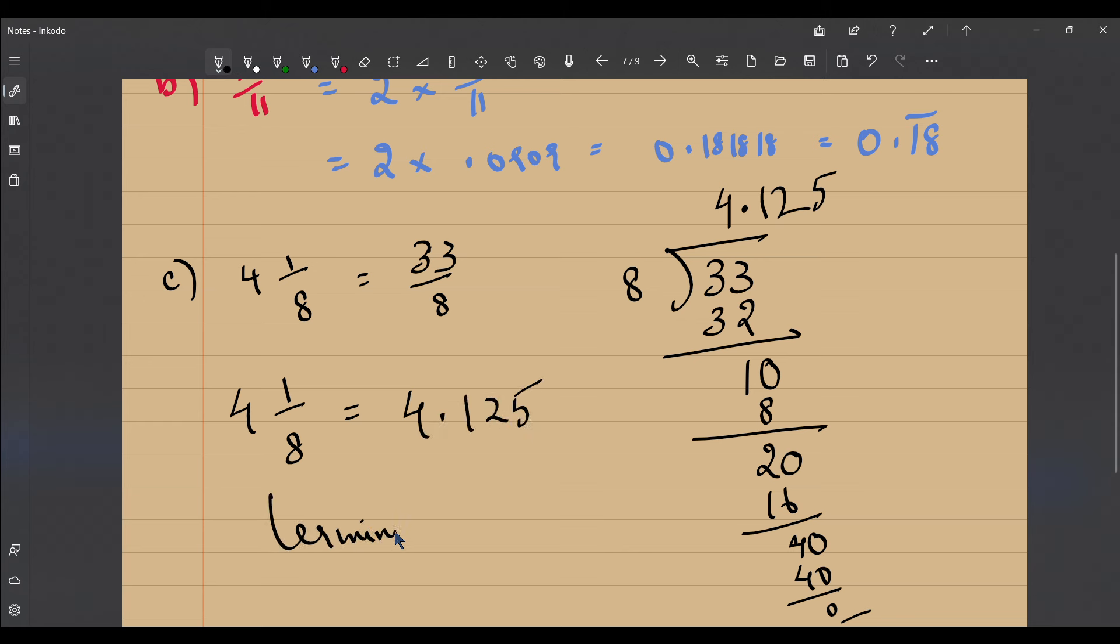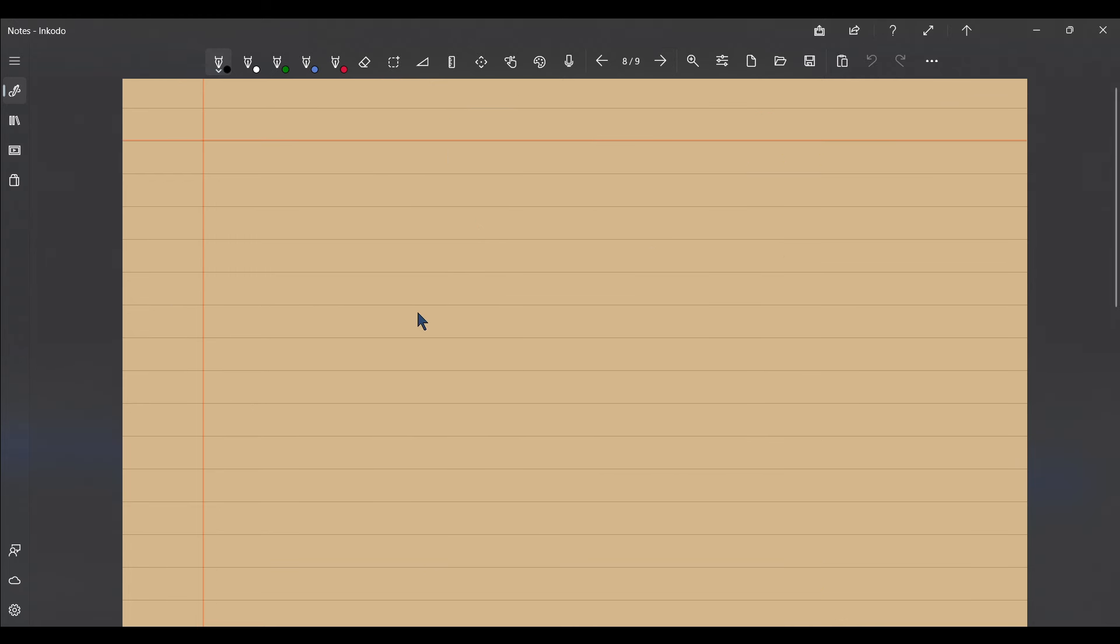Let's do just one more example - let it be 3 by 13, the fourth example converting fractions into decimals. So 3 is going to be divided by 13. 3 is smaller than 13 so right away you place the decimal point and add a 0.